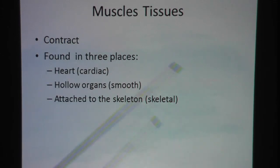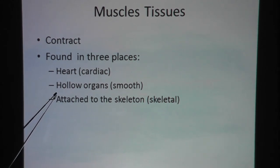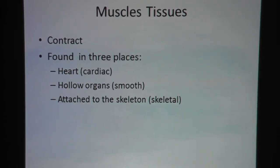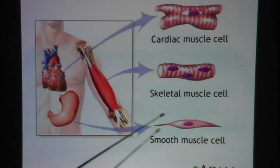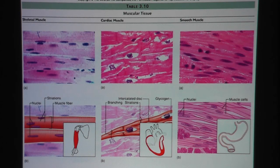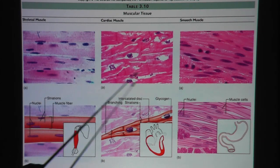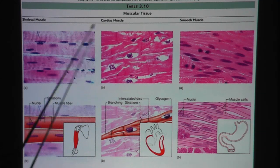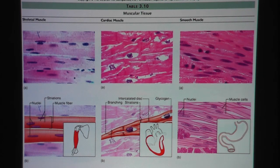All muscle tissue will contract. We have three types of muscle tissues in the body: cardiac, smooth, and skeletal muscle. Here's a picture of the three muscle types in the body and their location, and a quick overview of how they look different on histology slides. We will cover each type individually, so let's go ahead and look specifically at skeletal muscle.